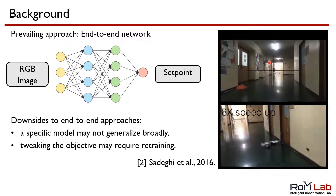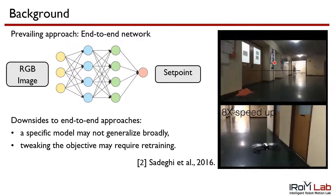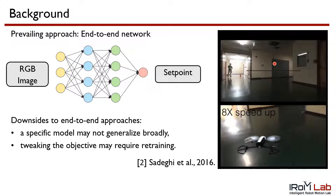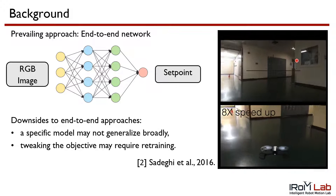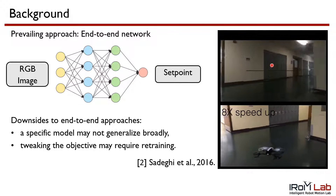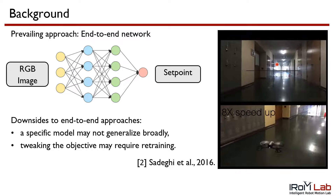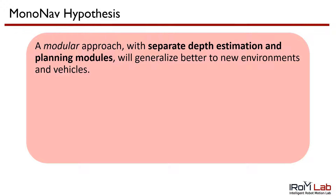A downside to such approaches is that a specific model may not generalize broadly to unseen environments or conditions. In addition, tweaking the objective or desired behavior may require retraining the model entirely. In contrast to end-to-end methods, our hypothesis is that a modular approach with separate depth estimation and planning modules will generalize better to new environments and vehicles.